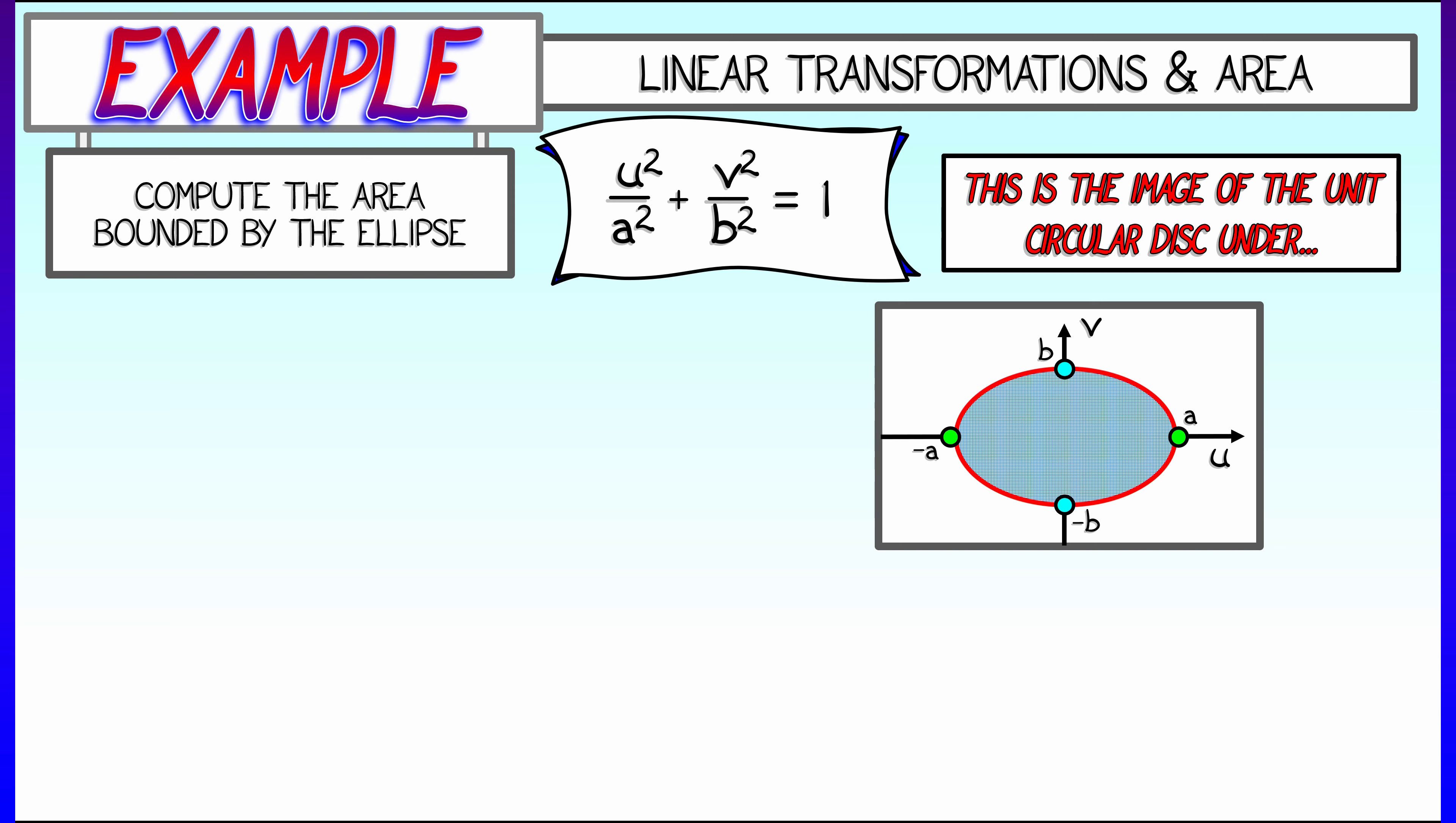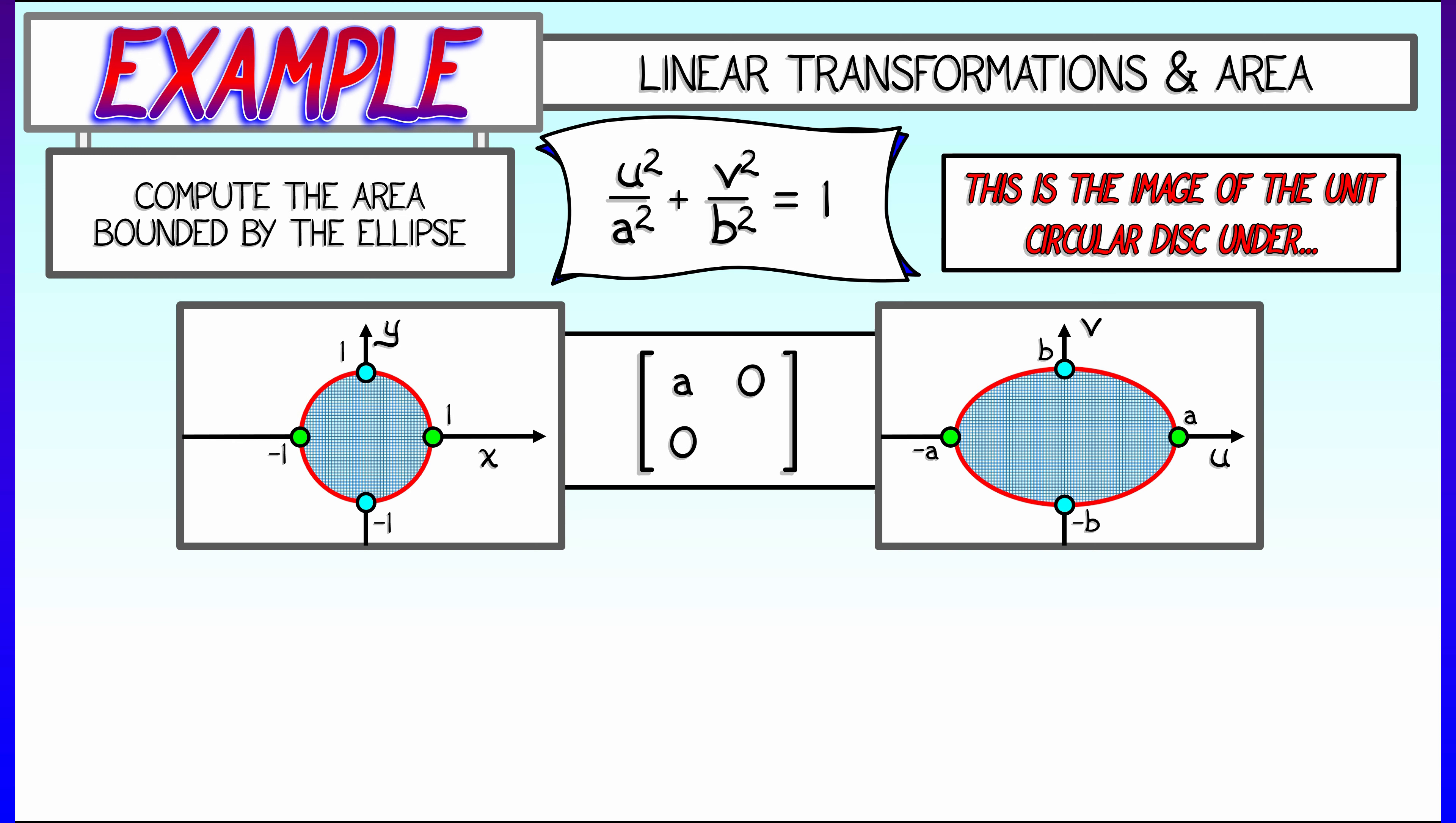This elliptical region is really the image of the unit circular disk in the x-y plane under the coordinate transformation that is of the form u equals a times x and v equals b times y.